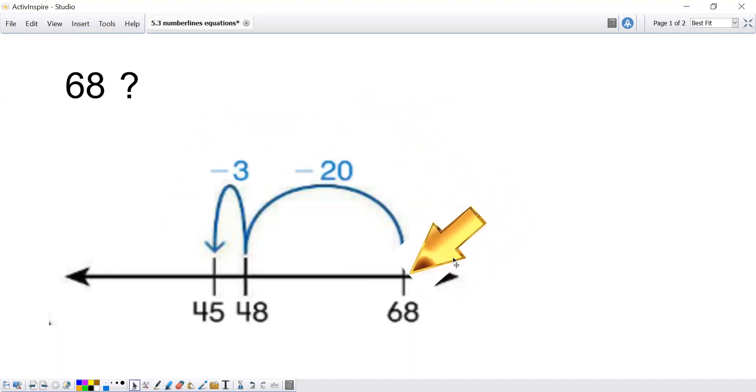It's decreasing by 20 and then 3. From 68, the number is becoming smaller. 20 and then 3. The next part of my equation is 68 minus 23. Here's 68 and now I'm decreasing by 20 and then 3.